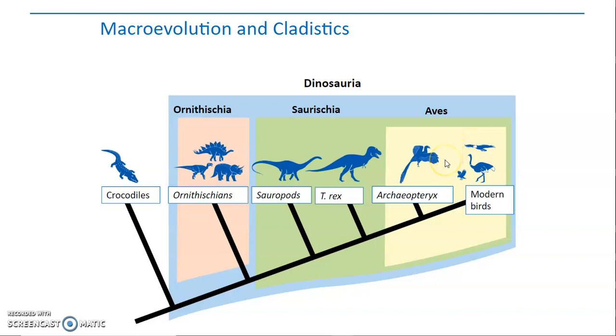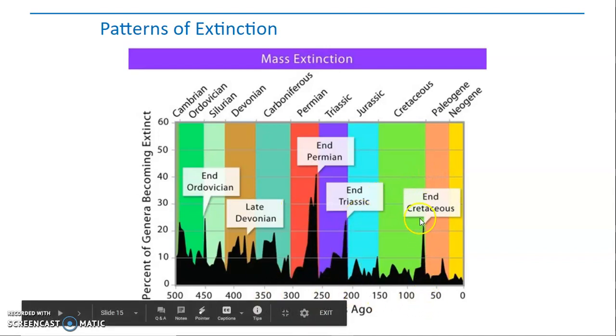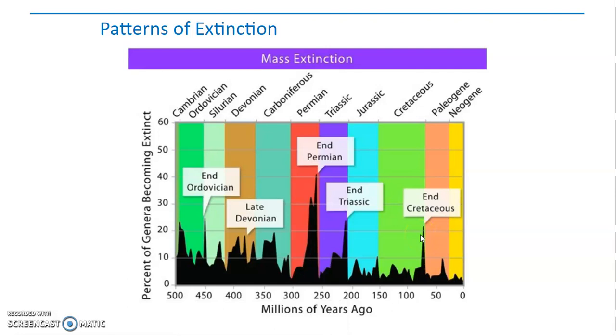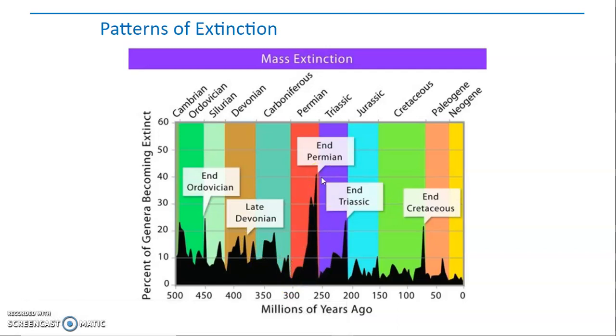So when we look at patterns of extinction, we tend to see that at the end of these periods we see a mass extinction. So at the end of the Ordovician there was an extinction, in the late Devonian there were actually a couple mass extinctions, at the end of the Permian there was a huge extinction, same with the Triassic and the Cretaceous. So typically the ends of these periods are marked by some kind of extinction event or massive change in the environment.